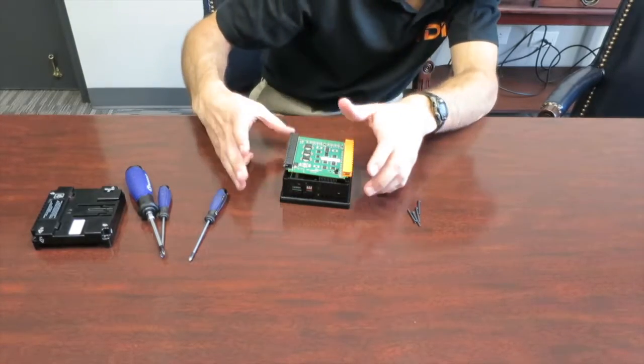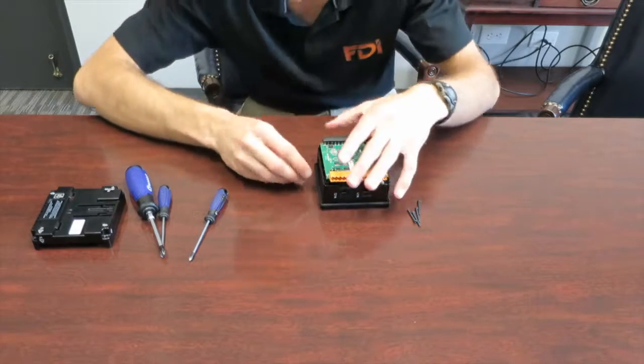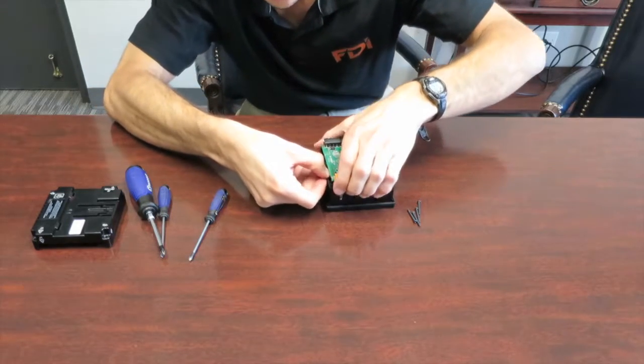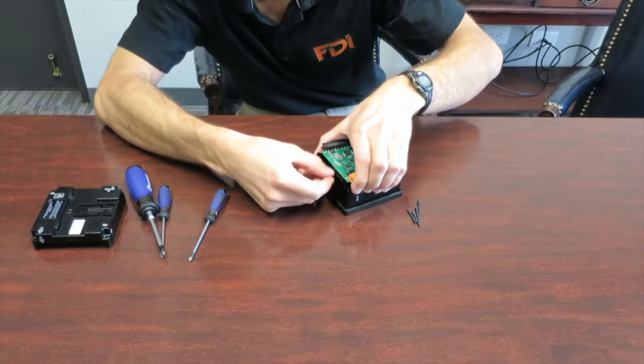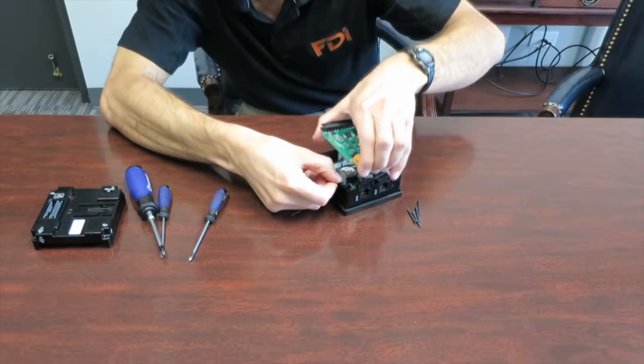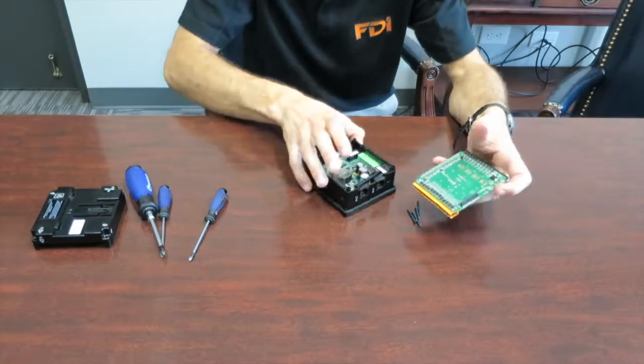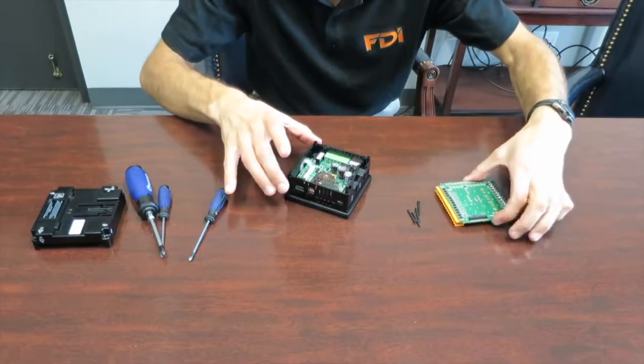Once you have it worked up, you're going to press down on this edge right here to remove it the rest of the way. Just kind of work it up. Then the input output board you can set to the side.